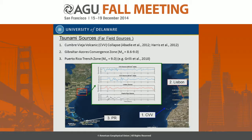The far-field sources: the first one was the Cumbre Vieja volcanic collapse. We studied two different slides for that source in the Canary Islands — 450 cubic kilometers and 80 cubic kilometers. The second source was an earthquake in the Gibraltar-Azores Convergence Zone, replicating the historic event in the 18th century. And finally, the earthquake in the Puerto Rico Trench Zone, also known as the Caribbean Subduction Zone.